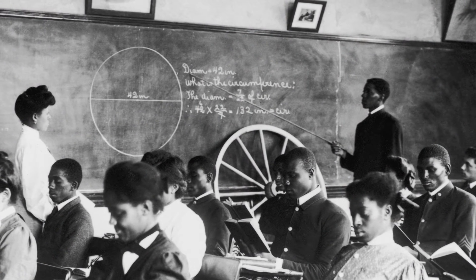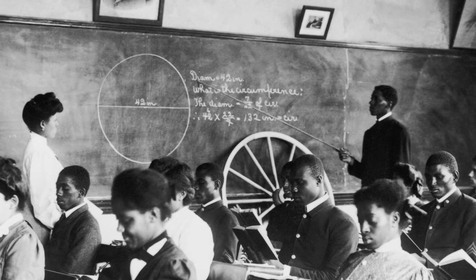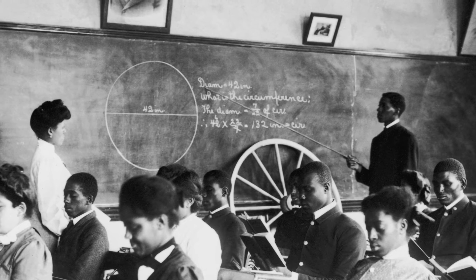I was recently researching some images from Tuskegee and I saw a photograph of a geometry class where the teacher was guiding the students through an equation to find the circumference of a circle. This photograph was from around 1906, so on the chalkboard you can see it says the diameter of the circle is 42 inches, and next to it the teacher has written out the steps in the mathematical equation — but they're not using pi.